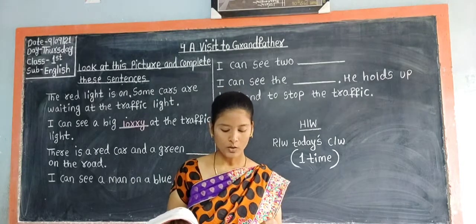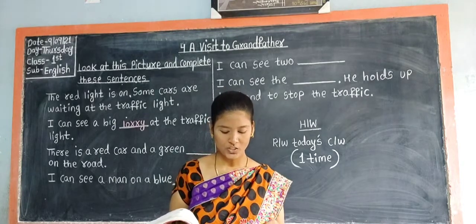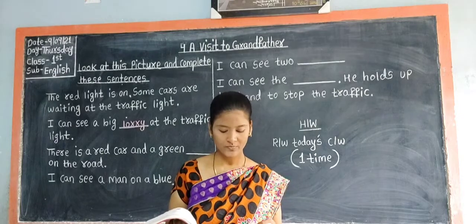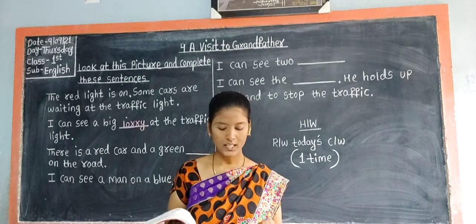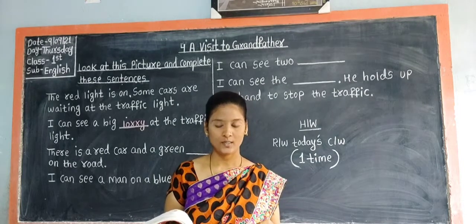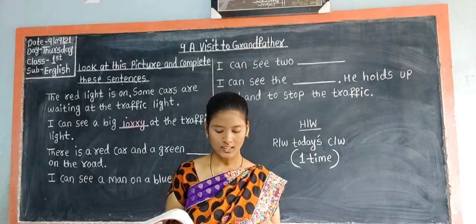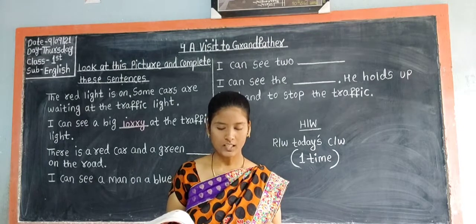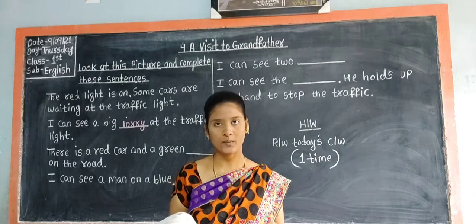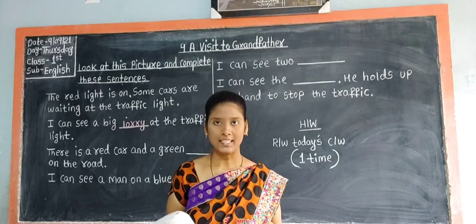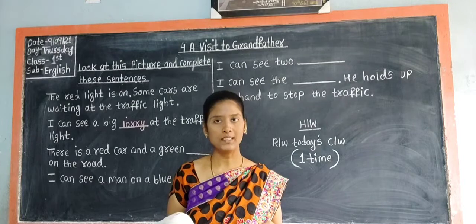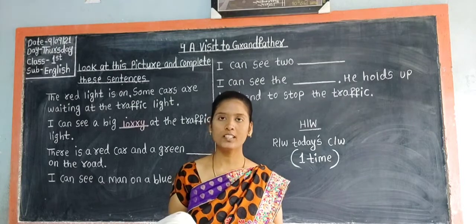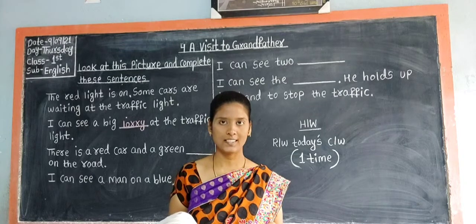So what you can see in the picture children? A big lorry. So here they have written 'lorry.' Like this we have to complete further sentences.